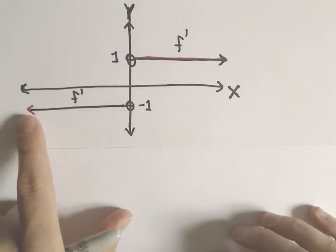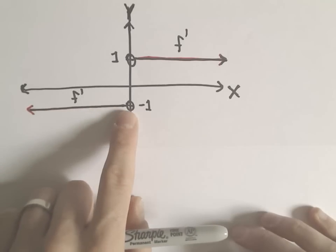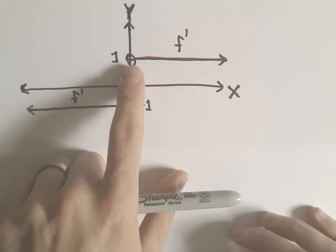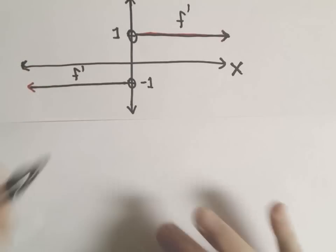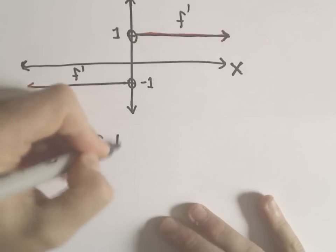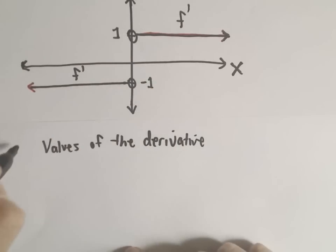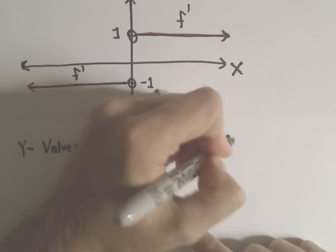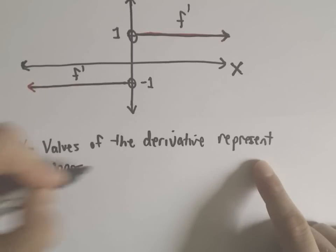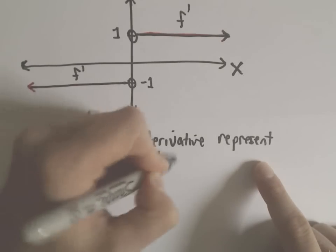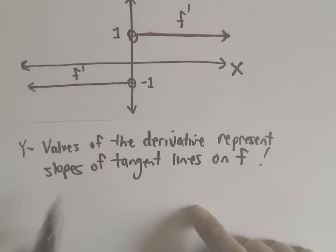My derivative graph shows that for x-coordinates less than 0, the derivative is always equal to negative 1, and then once we jump past 0, the value of the derivative equals positive 1. The key thing to remember is that the y-values of the derivative represent slopes of tangent lines on the graph of f.